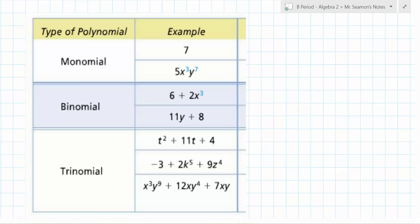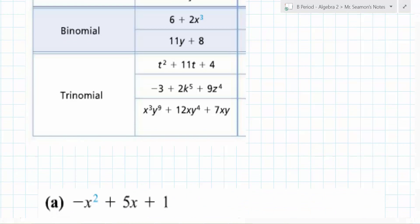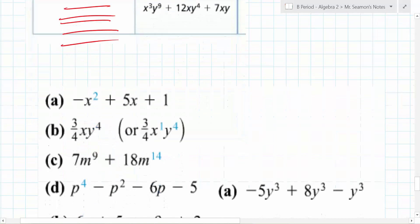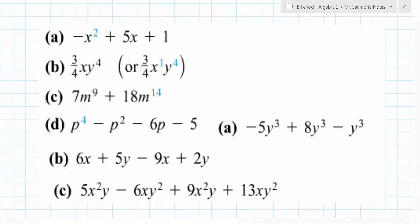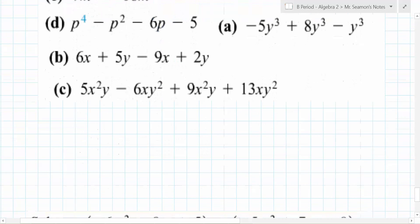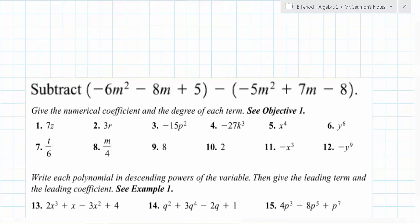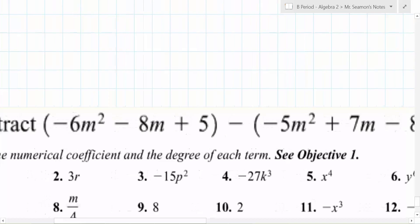So they have special names, monomials, binomial, trinomial means three terms. Great. It's just the number of terms. That's it. So you can write these in order. You can identify what they are. But the key thing is, what happens when you need to add or subtract polynomials?